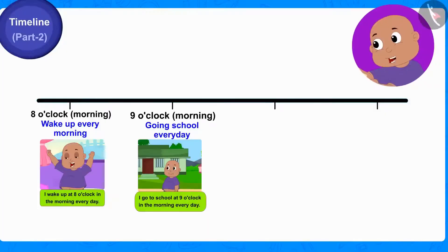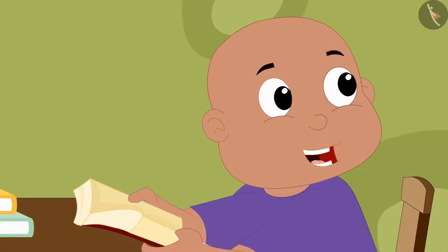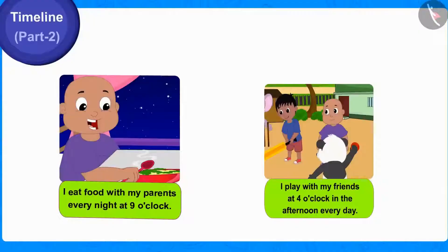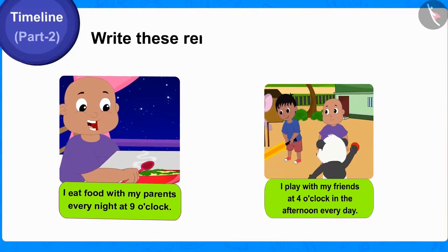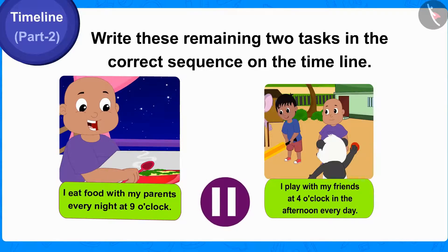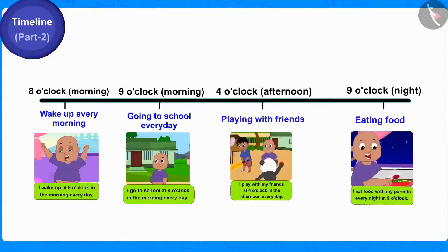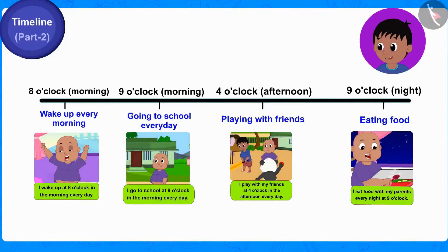Babalu got excited seeing Raju's picture and said it looks so much prettier than the daily routine he had written. Children, can you write these remaining 2 tasks in the correct sequence on the timeline? You can stop the video and find the answer. Well done children, you have written it correctly. Raju also completed the timeline in Babalu's diary by drawing beautiful pictures and writing the time in the correct order.